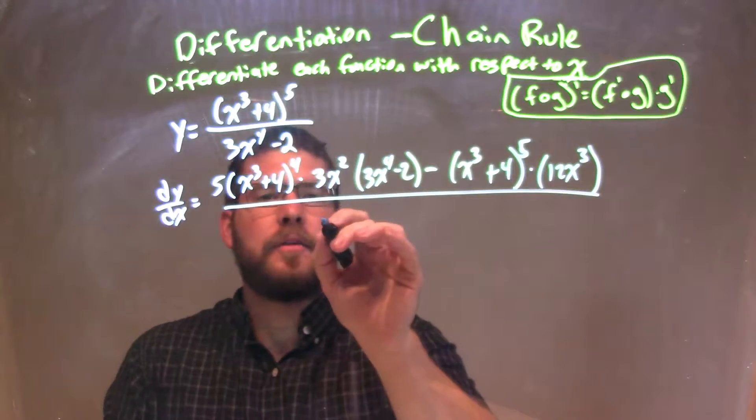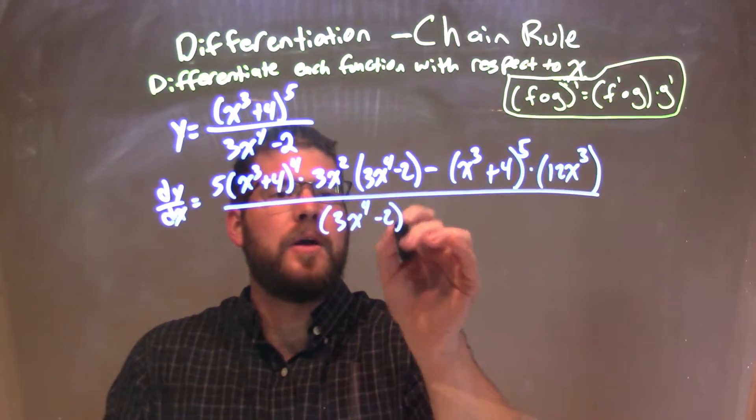All of that's going to be over my denominator squared, 3x to the fourth minus 2, all squared.